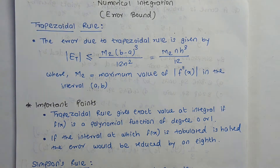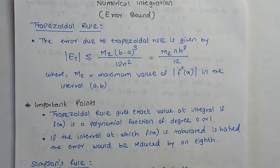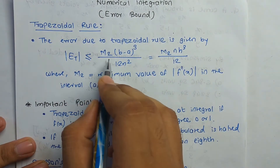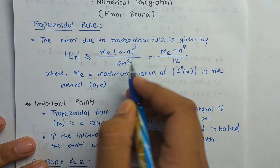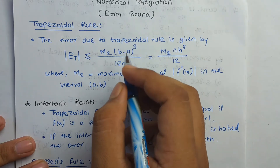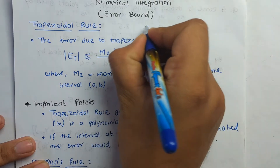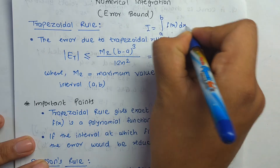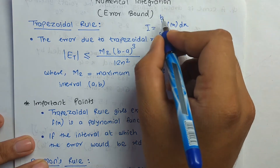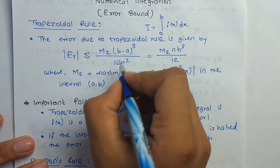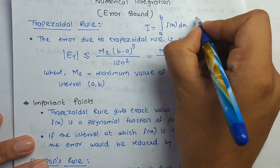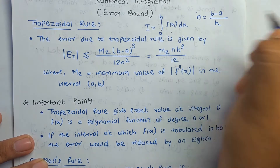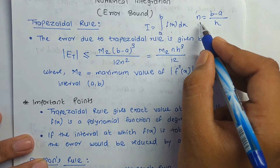First we are going to find the error for the trapezoidal rule. The error due to the trapezoidal rule is: M2 × (b − a)³ / (12n²). For those who don't know what b and a are: I is equal to the integration of a to b of f(x) dx, where a is the lower limit and b is the upper limit. n is equal to (b − a) / h.